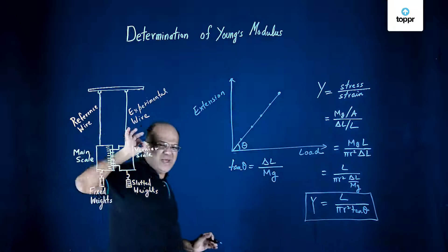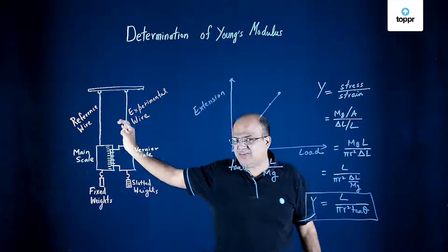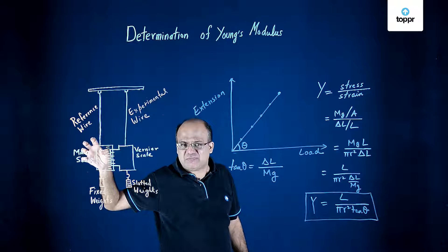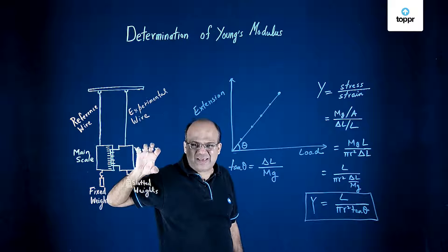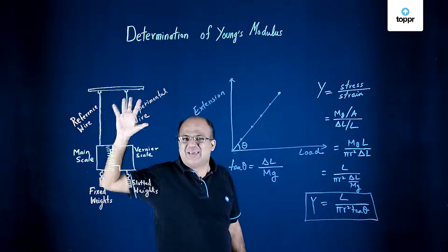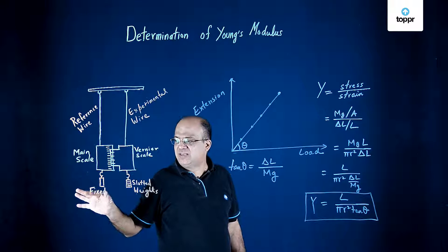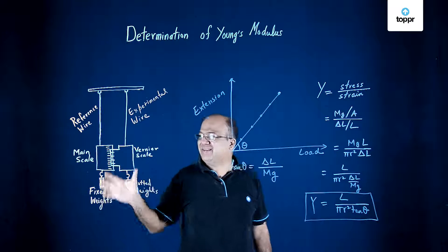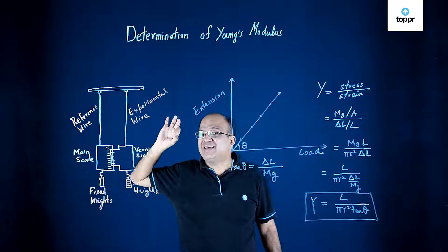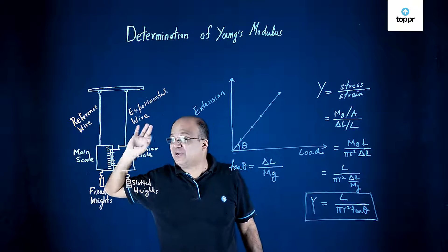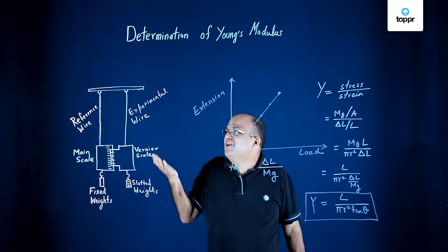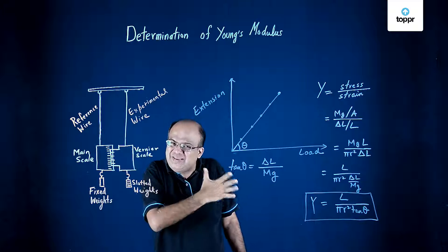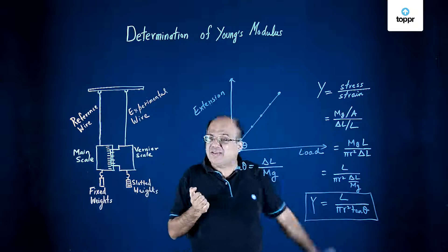We had two wires. One was reference wire, other was experimental wire. A main scale was hanging from the reference wire. A vernier scale was hanging from the experimental wire. Initially we put 1 kg on the hanger of both the wires so that the wires were straight, kink free, the wires were taut. After that we measured the radius of the experimental wire at several places to get an idea about the radius, so that we can calculate the cross-sectional area.